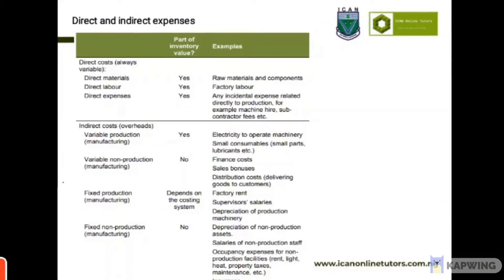This first section is a brief review of what we've done in the previous class. Direct costs are always variable costs. Variable costs simply means that the amount increases as the quantity to be produced also increases. For example, if I'm producing a three-tier cake, I know I'll use three packets of flour. So if I'm making a nine-tier cake, I'm going to use nine packets of flour — as the expected quantity increases, so does the direct cost.